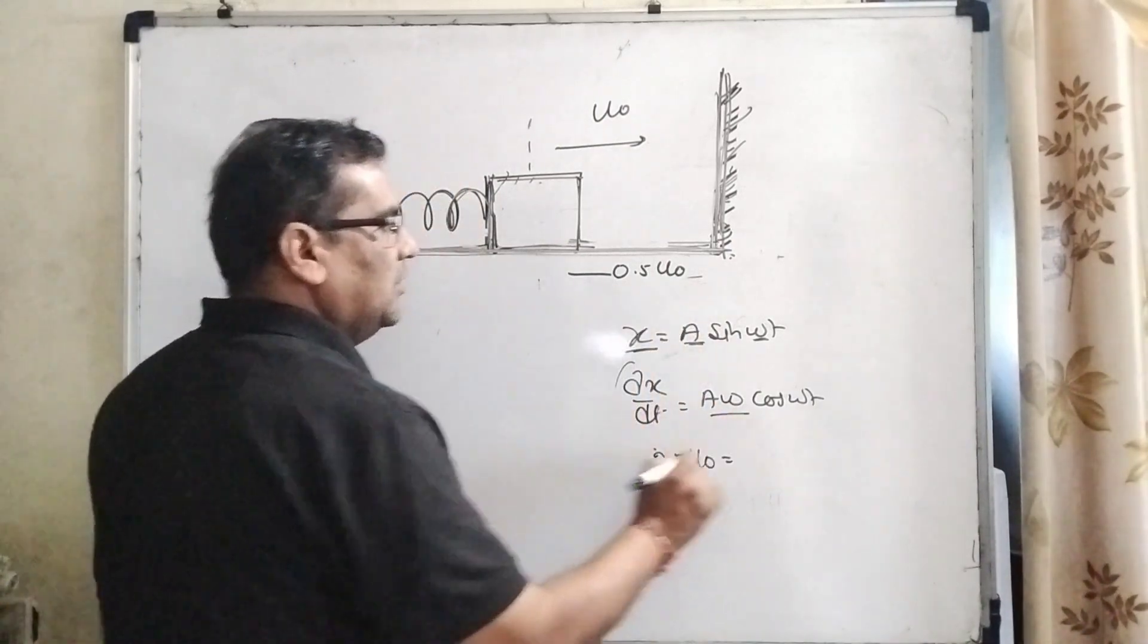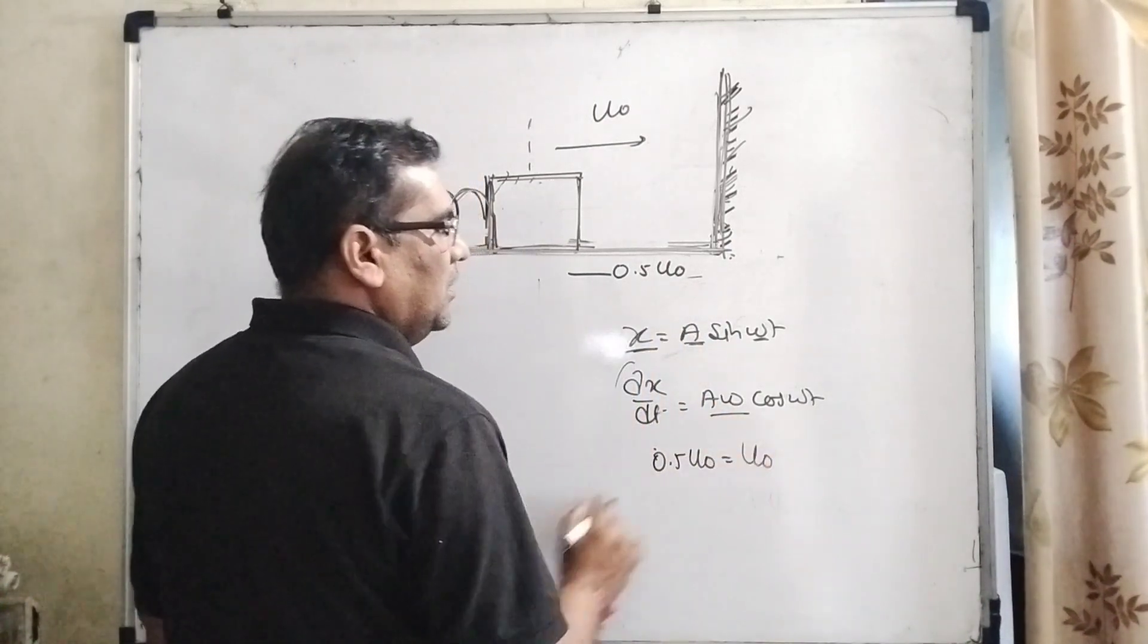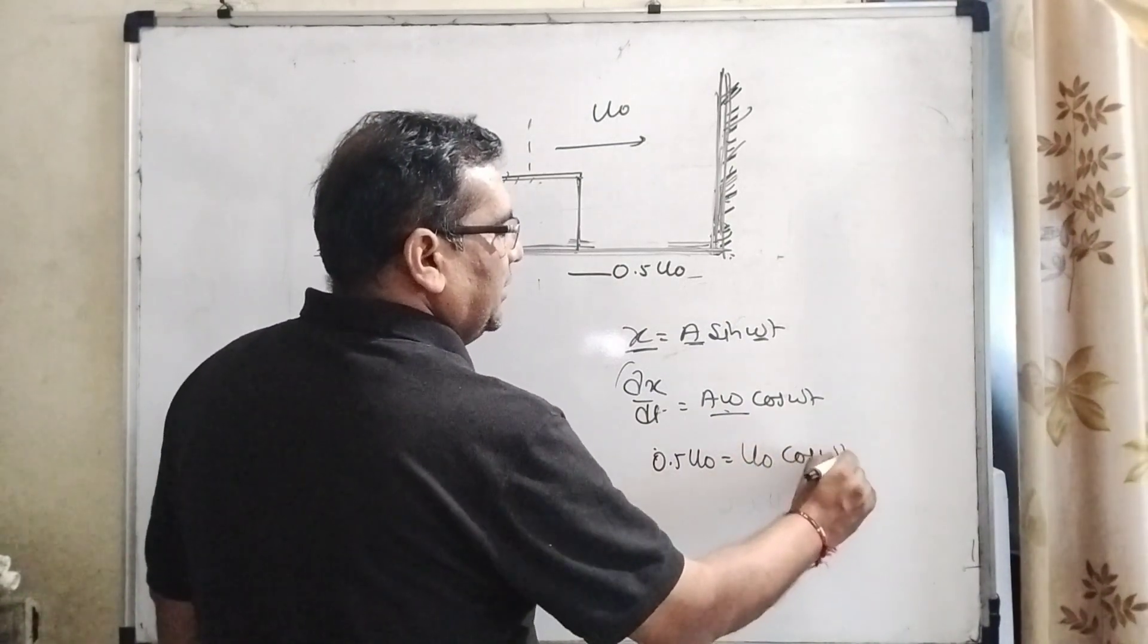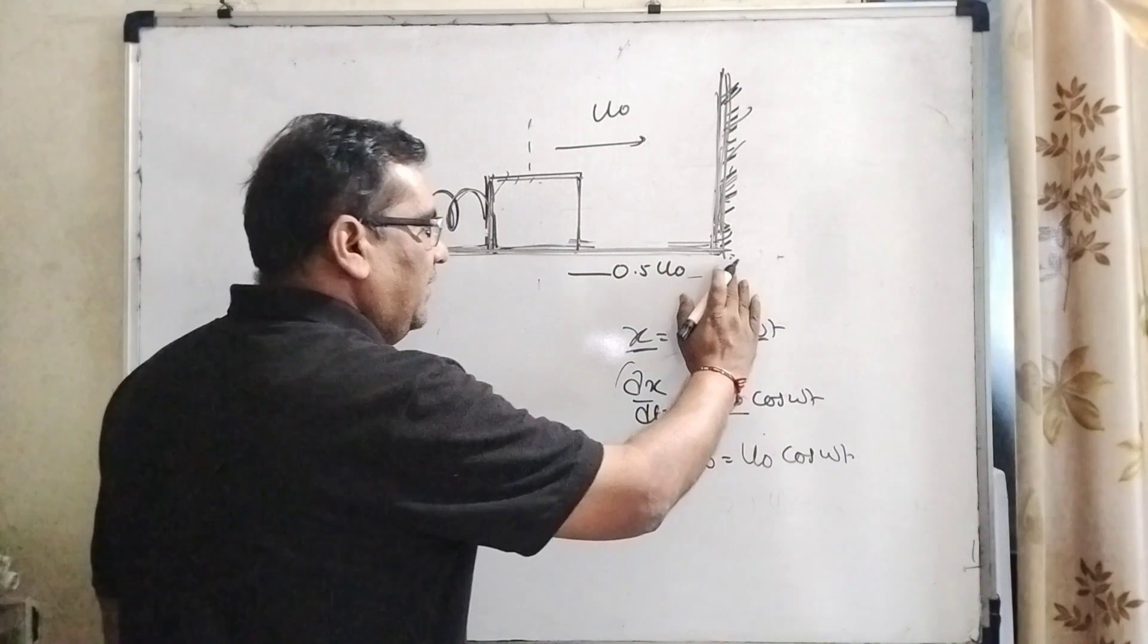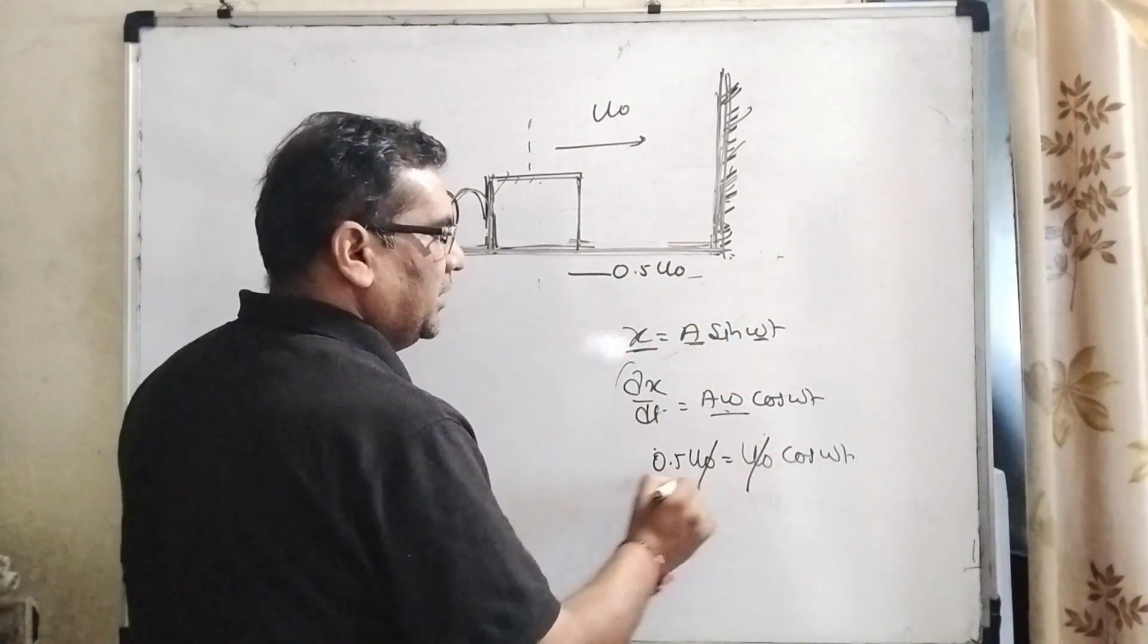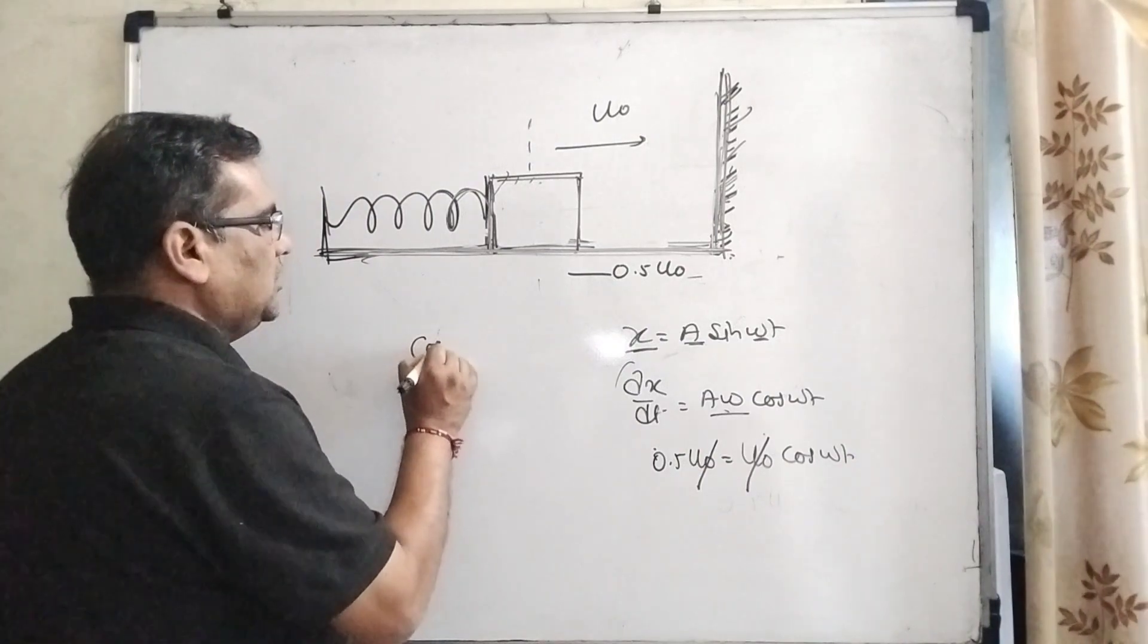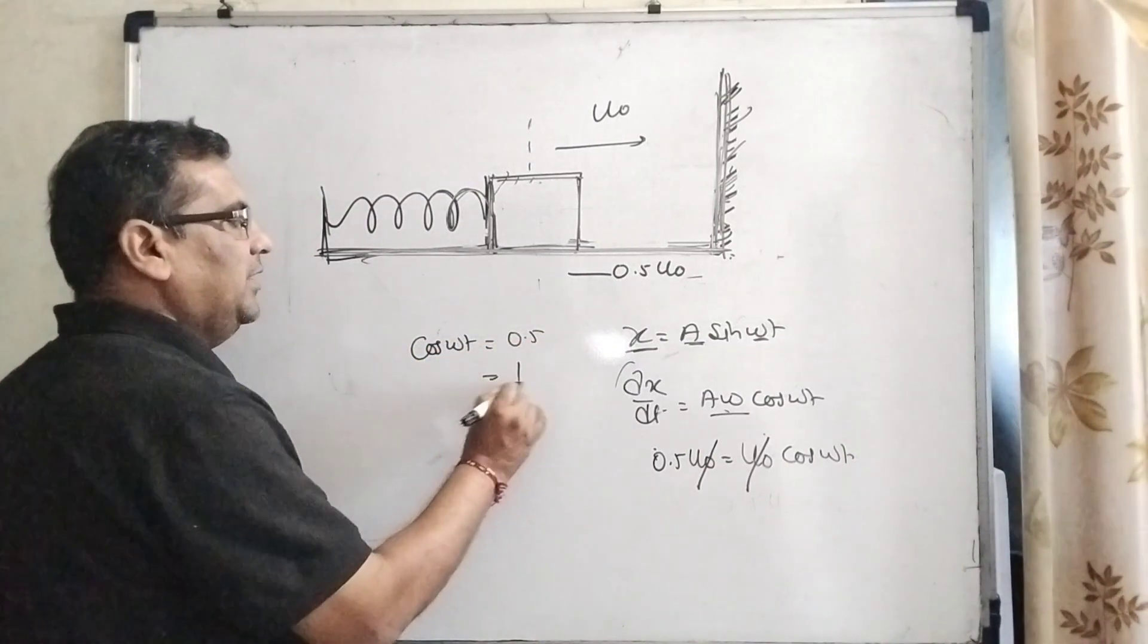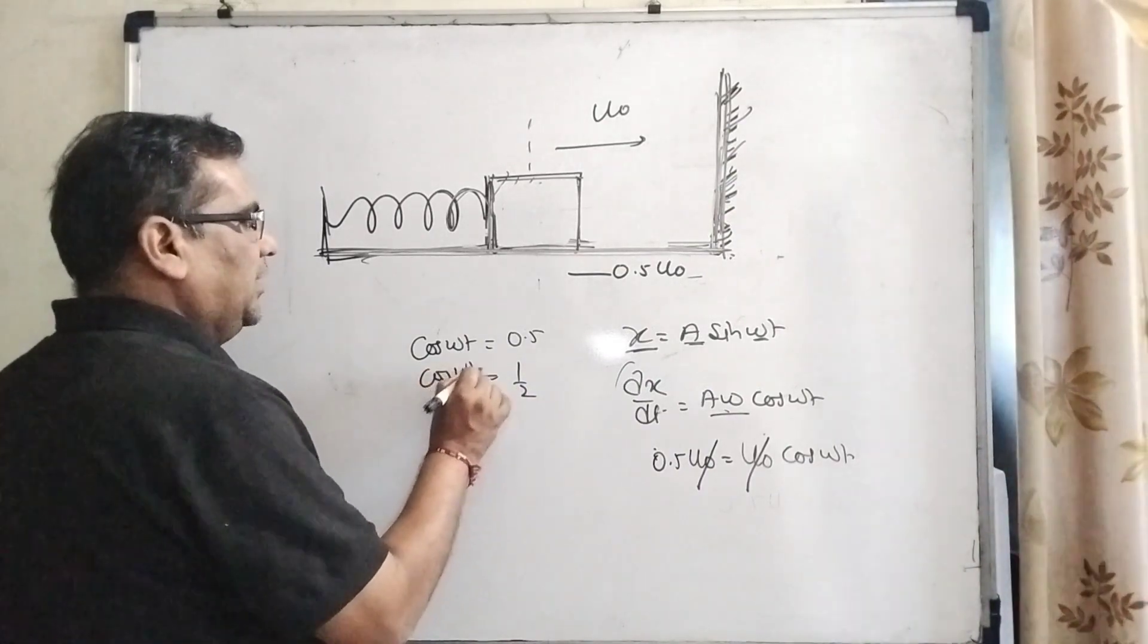Here maximum displacement is also u0. Since u is 0.5 u0, then u0 times 0.5 equals u0 times cos omega t. So u0 cancels out, then cos omega t equal to 0.5.